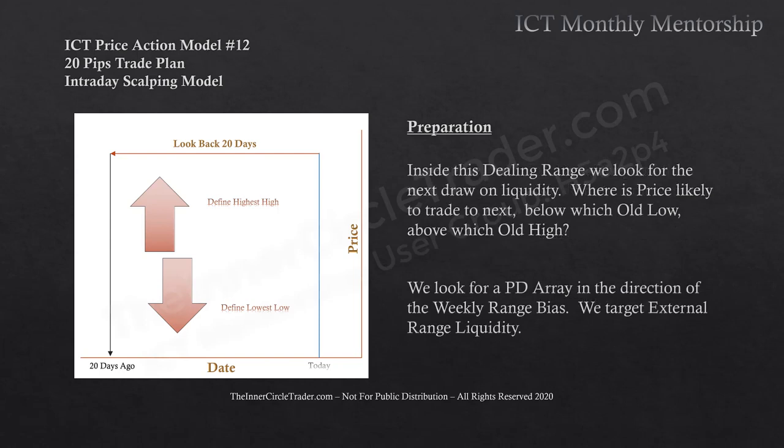Inside this dealing range, look for the next draw on liquidity — where is price likely to trade to next? Below which old low, or above which old high? We look for a PD array in the direction of the weekly range bias. We're looking for the most likelihood of price expanding on that weekly candle that's just opened, and we're going to be targeting external range liquidity.